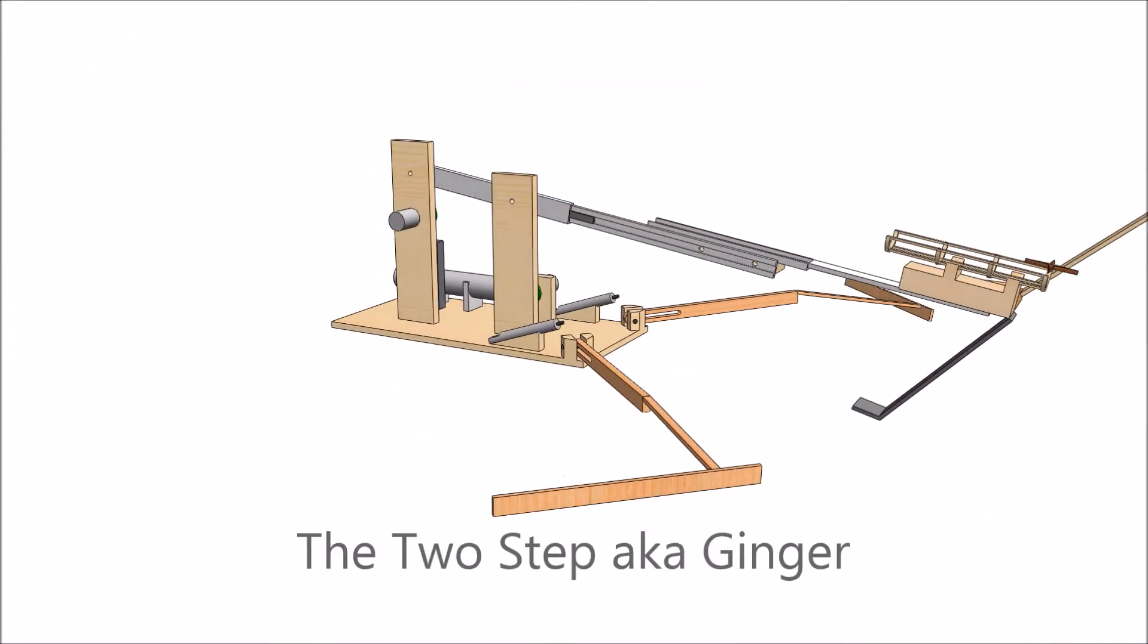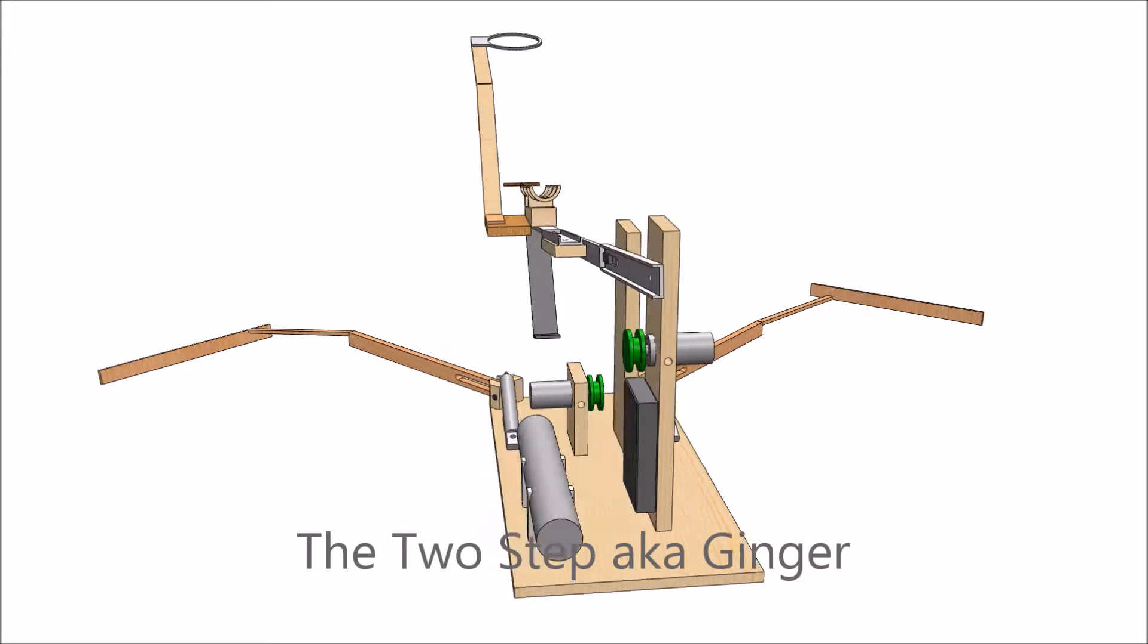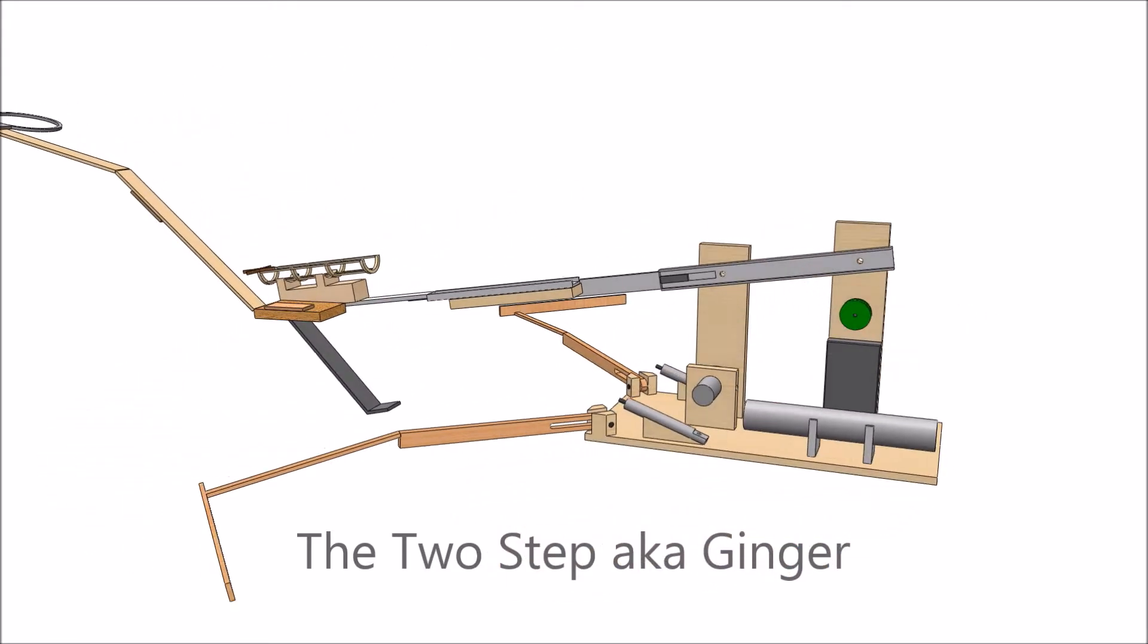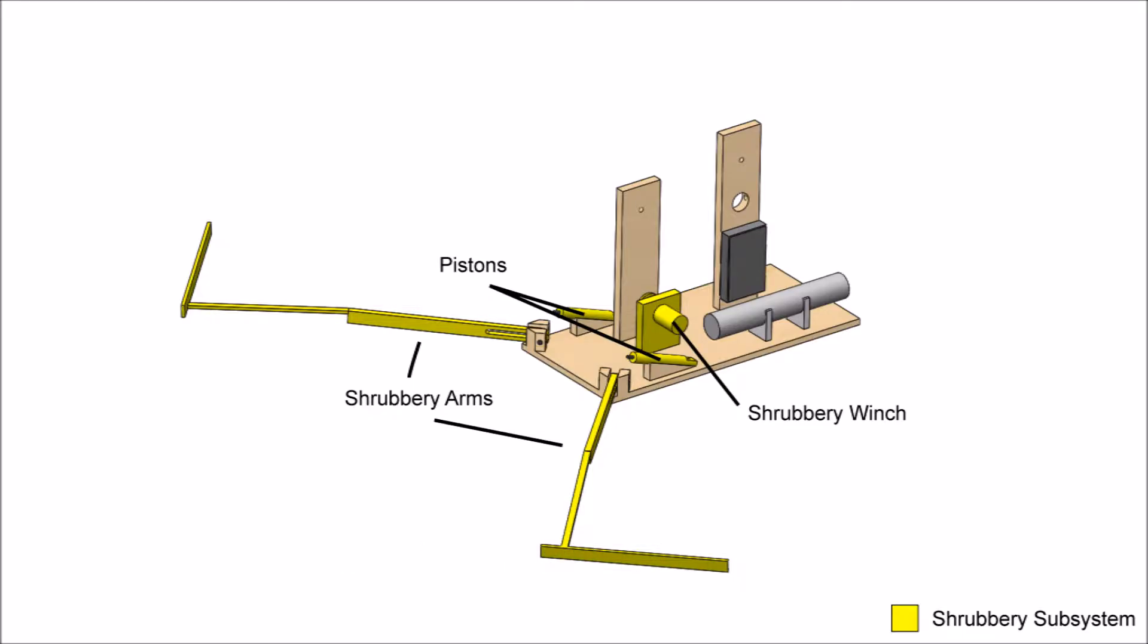Our chosen design is the Two-Step, also known as Ginger. This is because it deploys in two steps. The first deployment is the extension of the shrubbery arms, which are pushed outwards by the activation of two individual pistons.